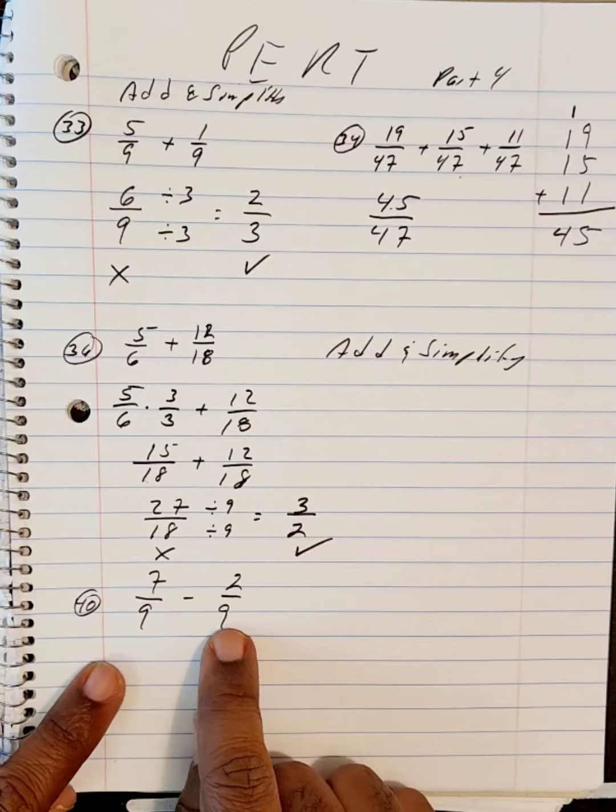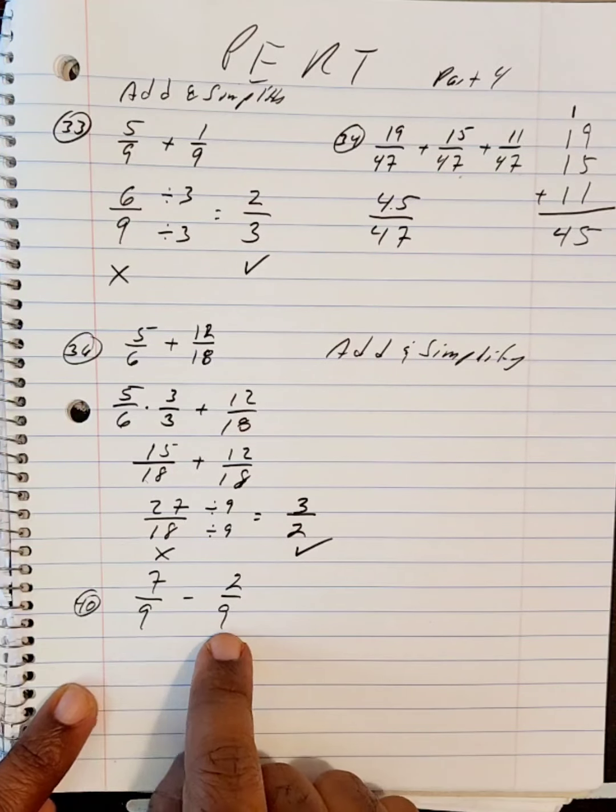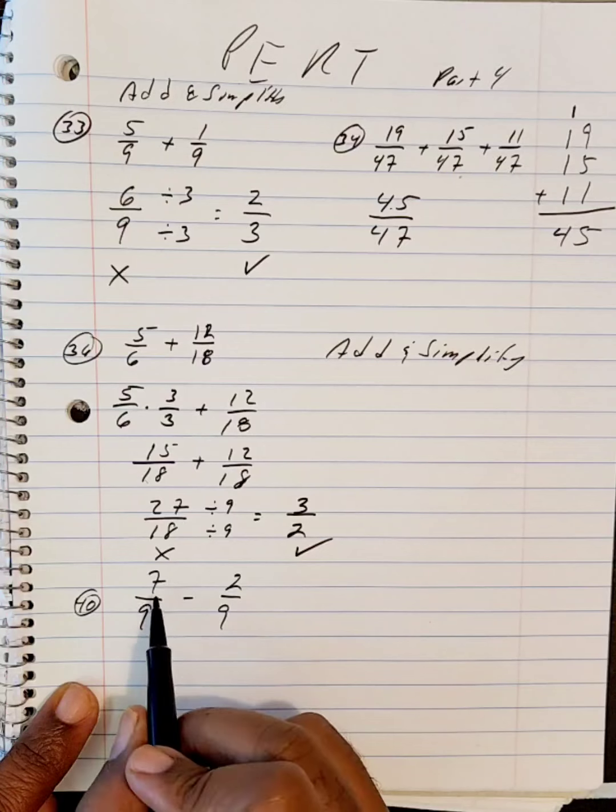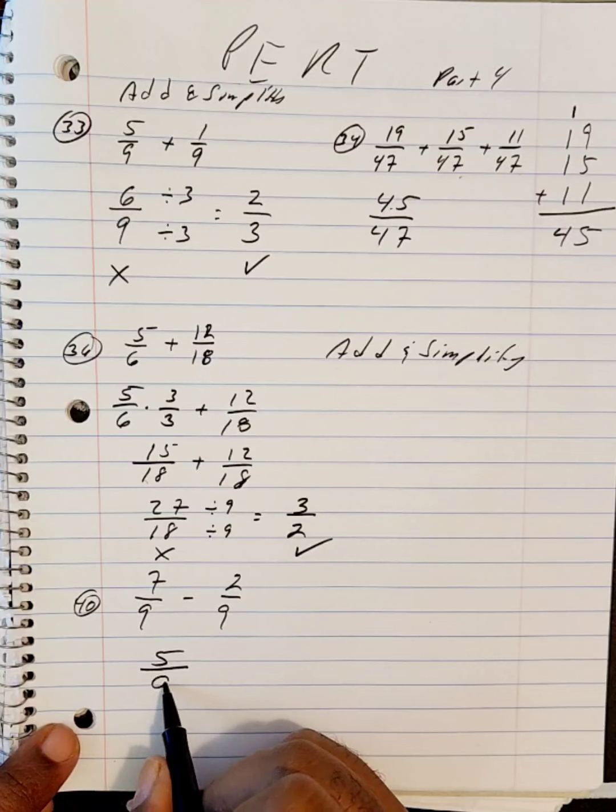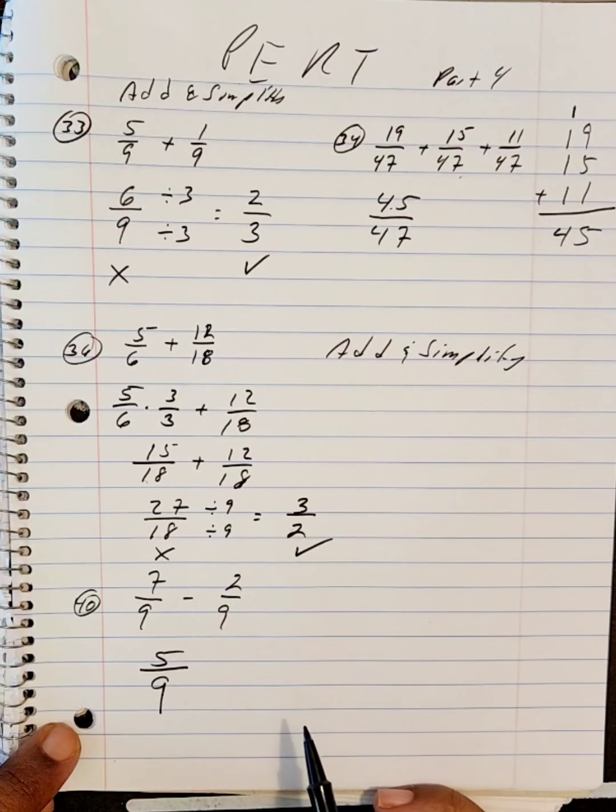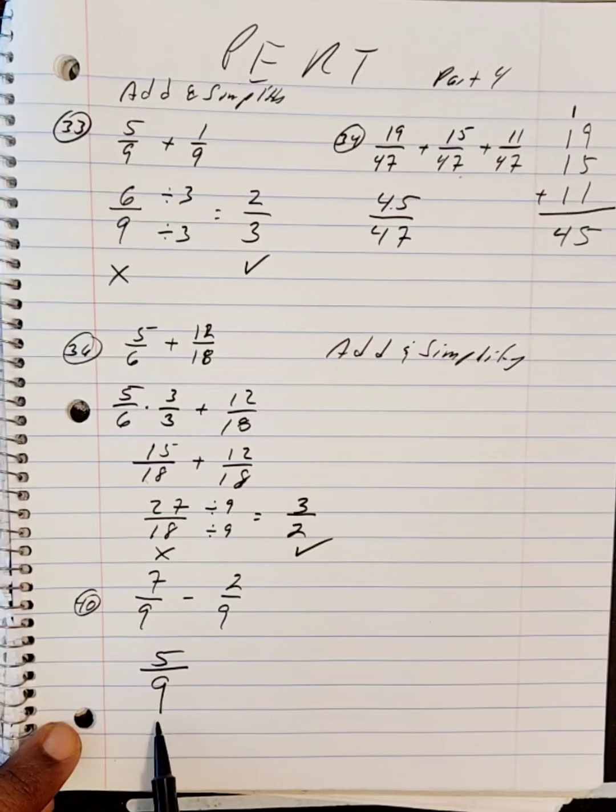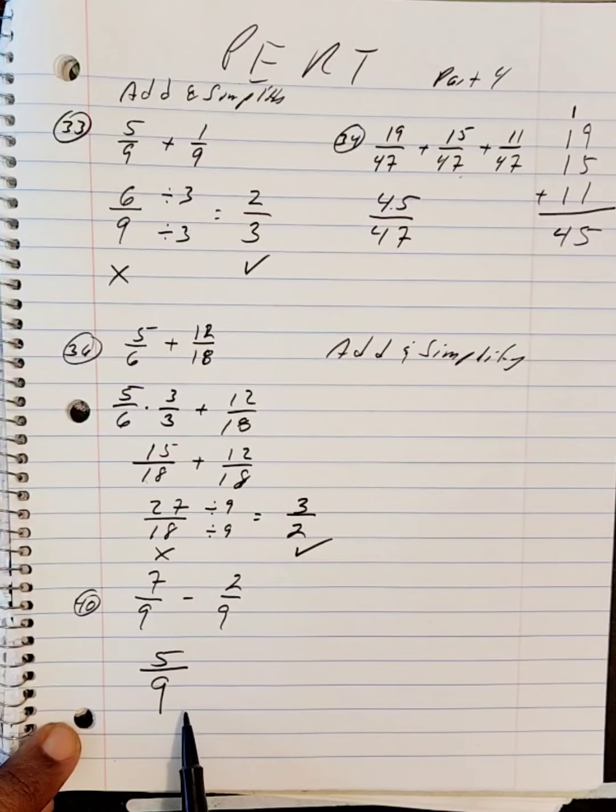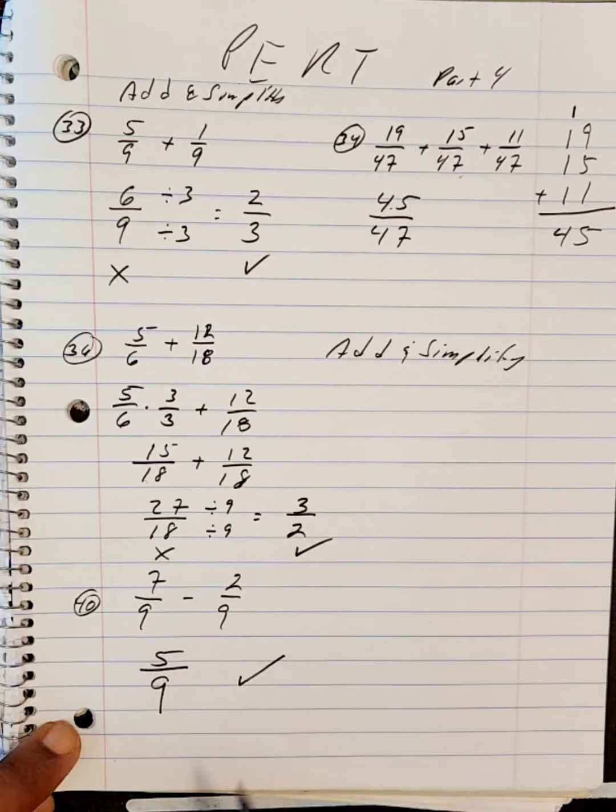Now, this is subtraction. Subtraction, again, with fractions, you need the same denominators, and we have that. So 7 take away 2, which will be 5, over the denominator of 9. Now, the numbers that divide 5 are 1 and 5, but the numbers that divide 9 are 1, 3, and 9. Nothing in common, so this is completed.